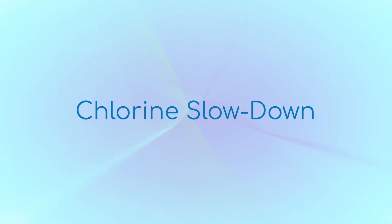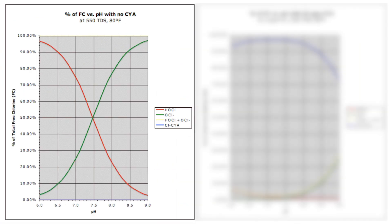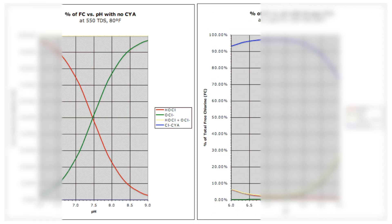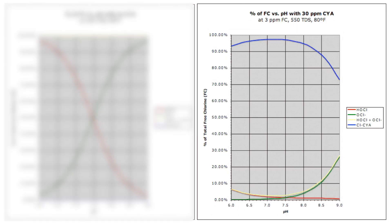But what happens when you have way more CYA than you need? You might be astounded at how dramatic the impact of CYA is on chlorine. In non-stabilized pools, the strength of chlorine is largely determined by the pH — because of the percentage of strong hypochlorous acid versus weak hypochlorite ion. But with CYA, the vast majority of chlorine is bound to CYA and the percentage of hypochlorous acid plummets to about 3% or less.